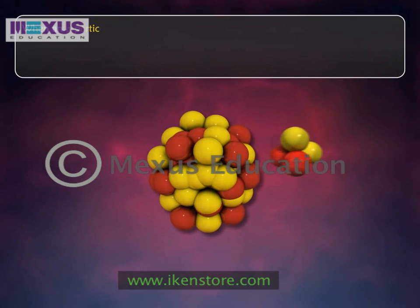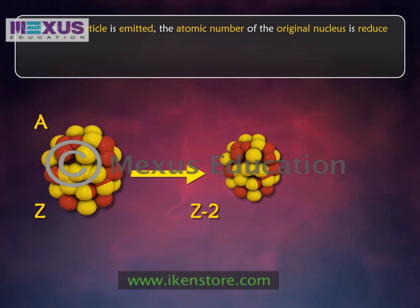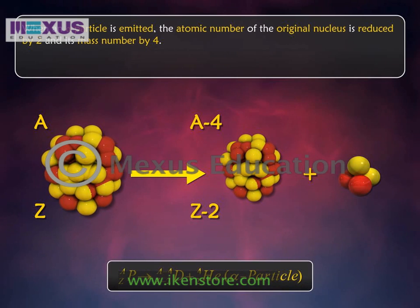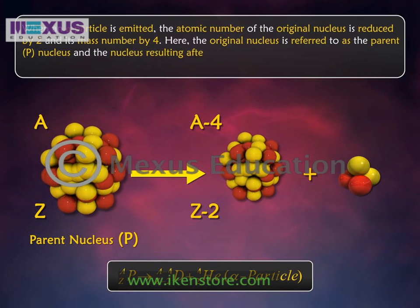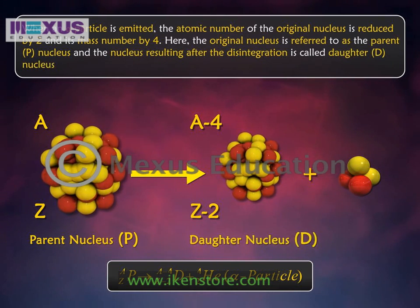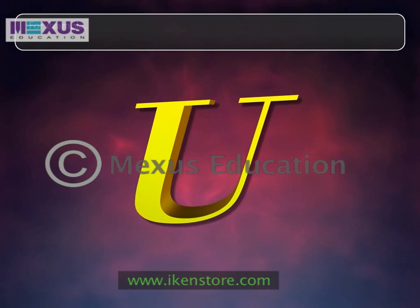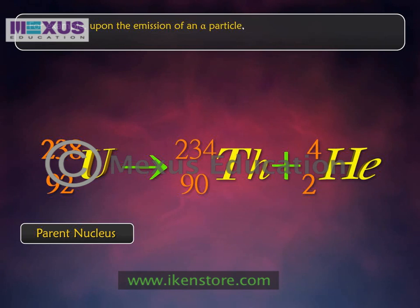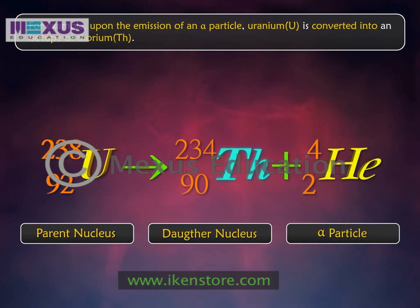When an alpha particle is emitted, the atomic number of the original nucleus is reduced by 2 and its mass number by 4. The original nucleus is referred to as the parent nucleus and the nucleus resulting after the disintegration is called the daughter nucleus. For example, upon the emission of an alpha particle, uranium is converted into an isotope of thorium.